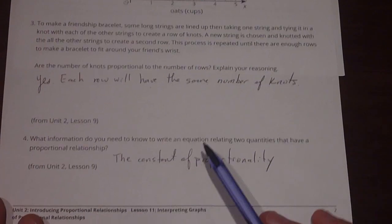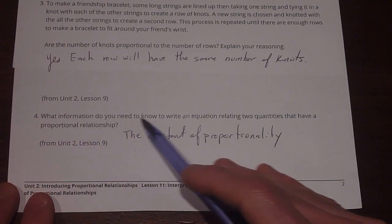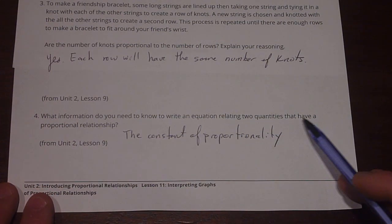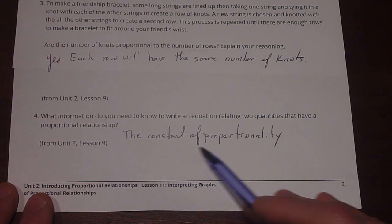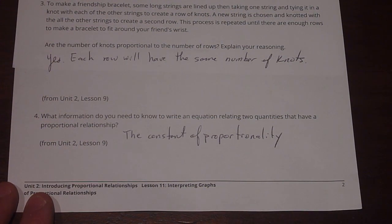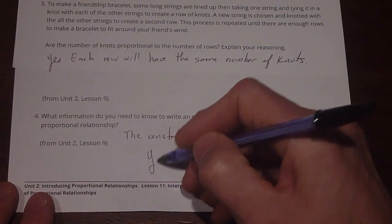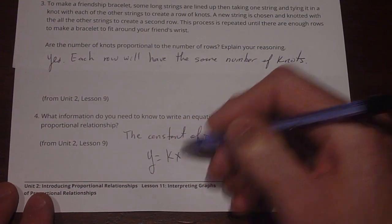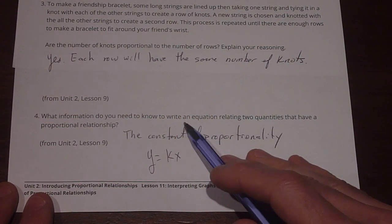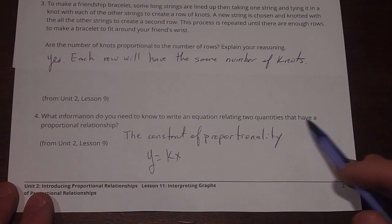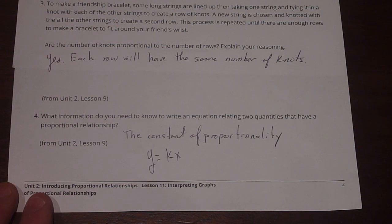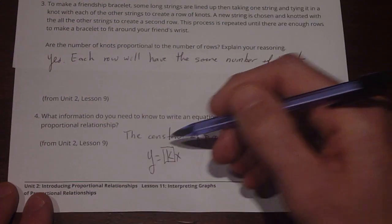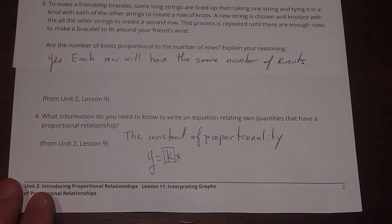Number four says, What information do you need to know to write an equation relating to quantities that have a proportional relationship? Well, you need to know the constant of proportionality. That's the most important thing. When we have y equals kx as our general equation for the constant of proportionality relating to quantities in a proportional relationship, y equals kx is going to be the most important thing. So k is the most important thing in that equation that we have to know.